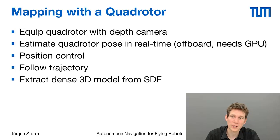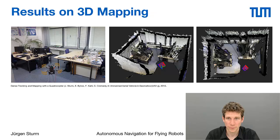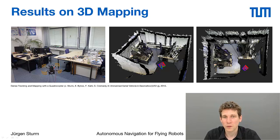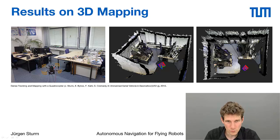As a side product we obtain a 3D model from the signed distance function, even with color, that an architect could use to show how a room looks like. Here are some examples from our lab spaces in Munich. We flew a small rectangular shape with the quadrotor in one of the labs, and this gives us a 3D model of the world — you can recognize some of the desks.